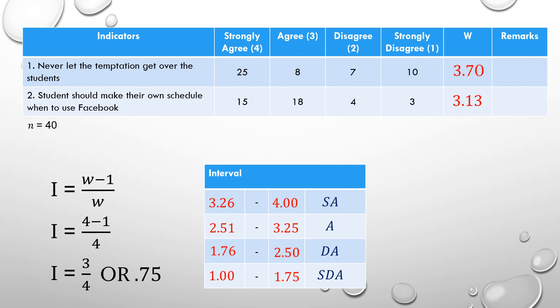The weighted mean of 3.70 falls within the interval 3.26 to 4.00, so the remark for indicator one is Strongly Agree. The weighted mean of 3.13 falls within the interval 2.51 to 3.25, so the remark for indicator two is Agree. That is all for now — thank you and God bless.